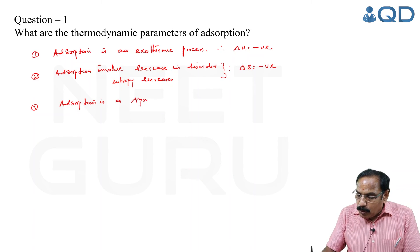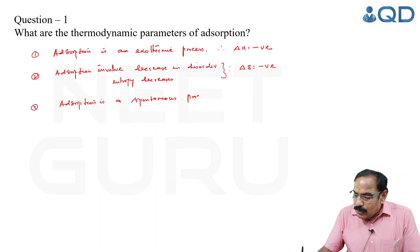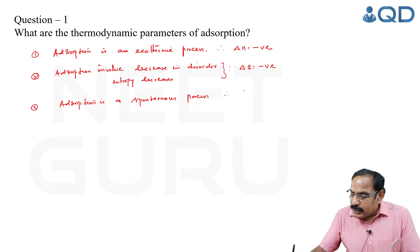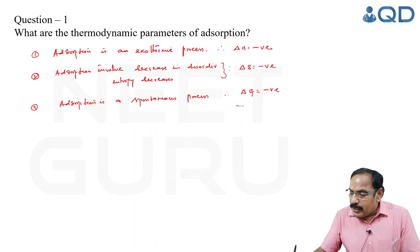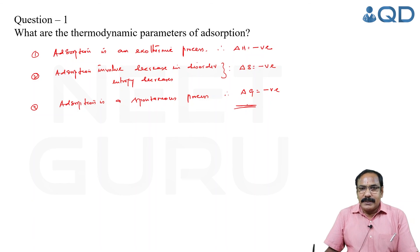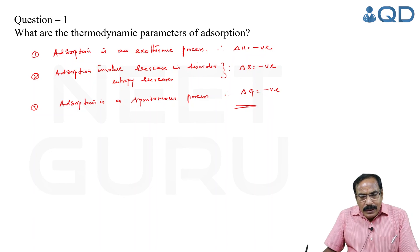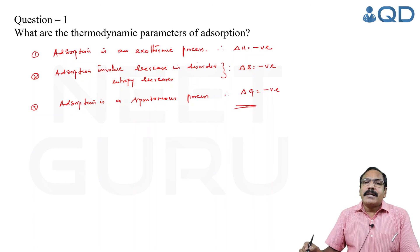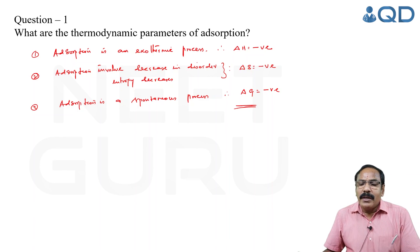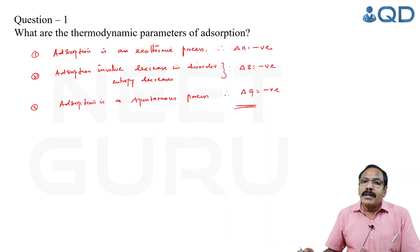Finally, adsorption is a spontaneous process. For a process to be spontaneous, the change in Gibbs energy should be negative — or the Gibbs energy of the system should decrease. So the thermodynamic parameters of adsorption are: delta H negative, delta S negative, and delta G also negative. We will be coming with more information on surface chemistry in our upcoming sessions. Thank you.